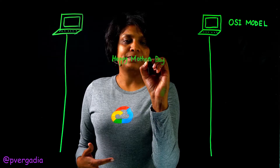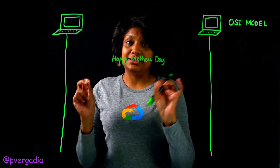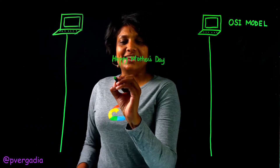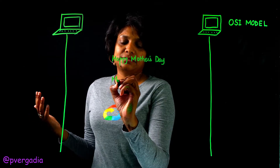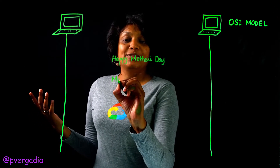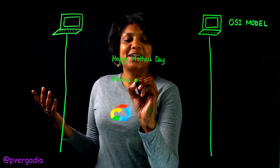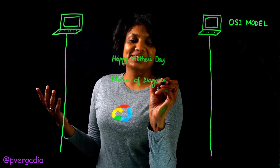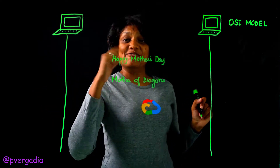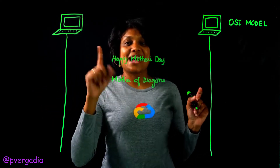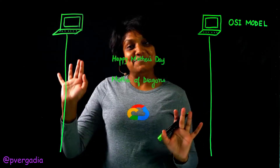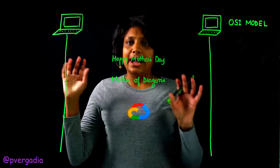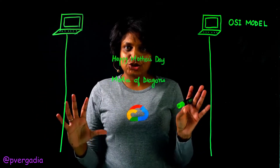It's a super secret message, so I encrypt it. Let's say I call it 'Mother of Dragons,' and my mom is the only one who knows that 'Mother of Dragons' means 'Happy Mother's Day.' The next thing that happens is I wrap up the package with that message and give it to the shipping service.